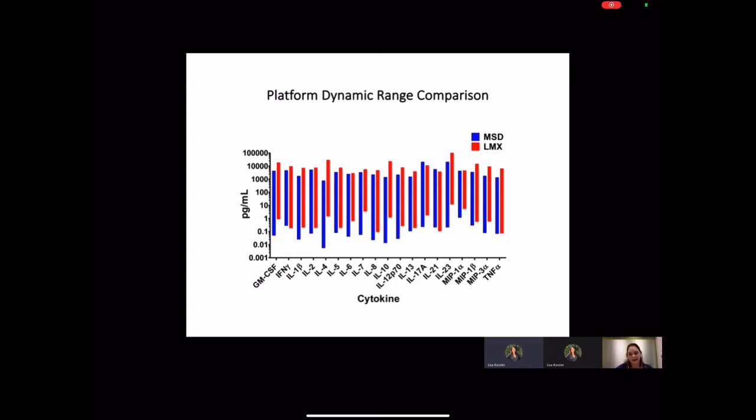Overall, we found that the dynamic range was larger for the MSD platform, so we expected that a platform having a higher sensitivity and dynamic range overall should yield more biological data.